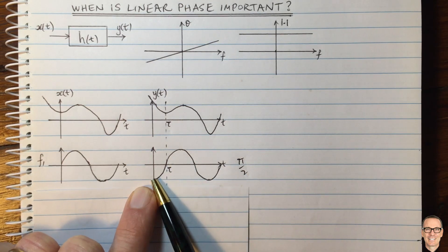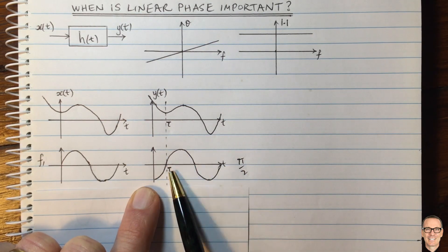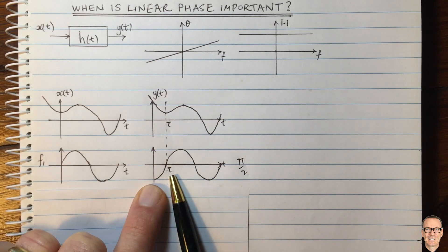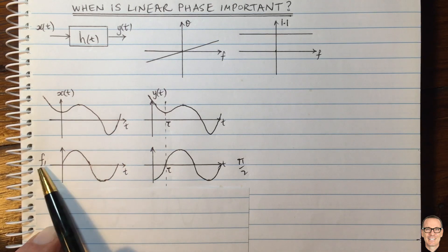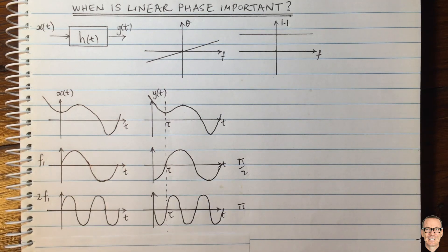You can see here this is a quarter of the wavelength for this delay of Tor. Now let's think of the wave component of this function, which is at twice that frequency. And here it is here.